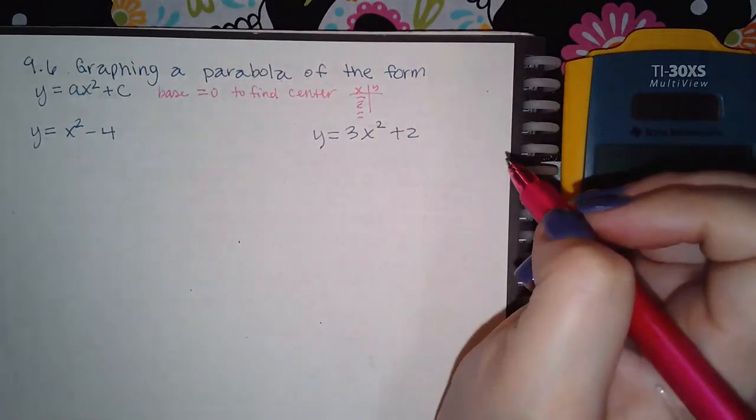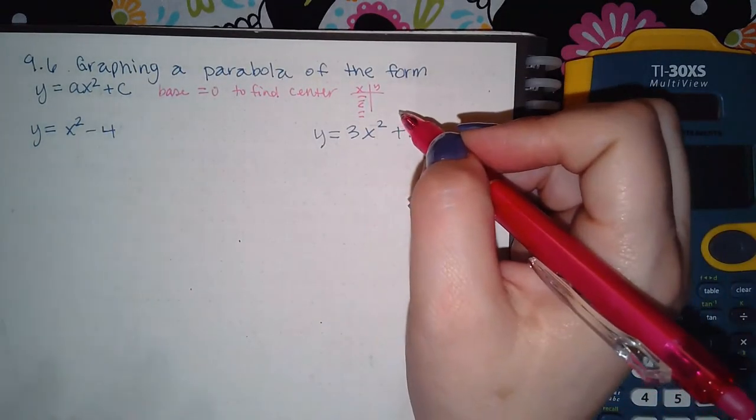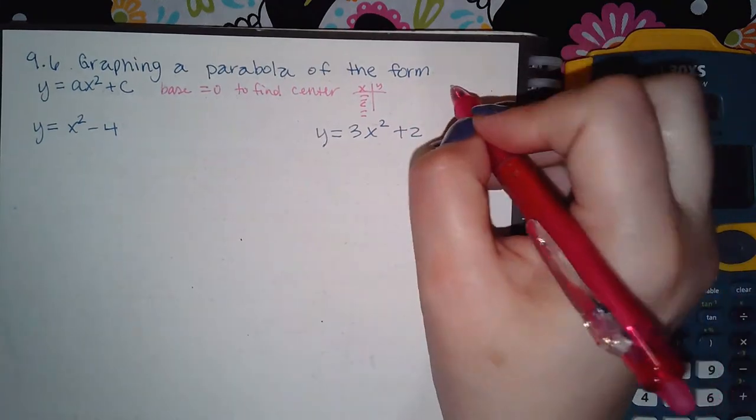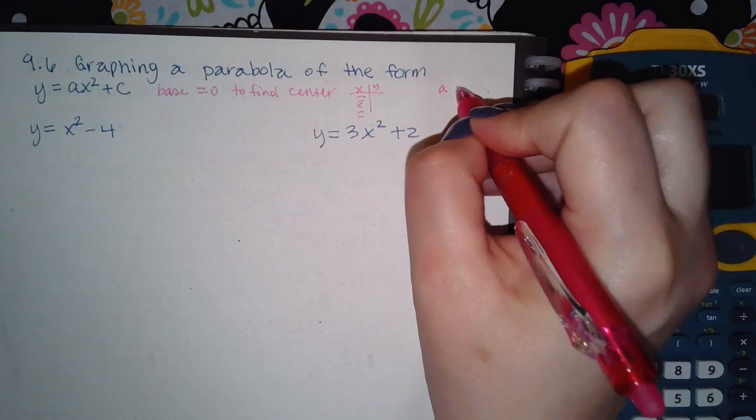Then we make a table with the center here and two x values to the left, two x values to the right so that we can find the y values and then graph it. We also take note that if the a, the coefficient in front of x squared, is positive, it'll go up like a u.